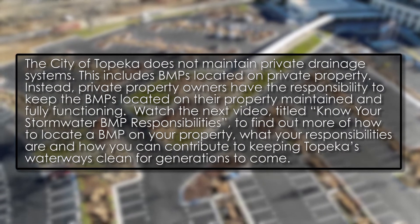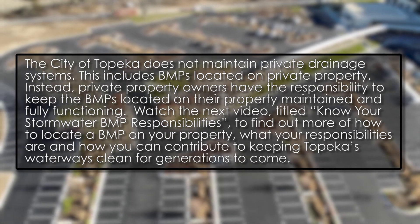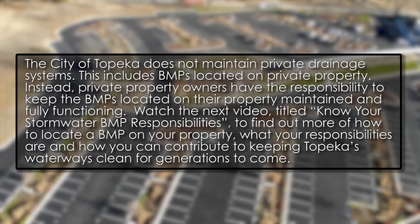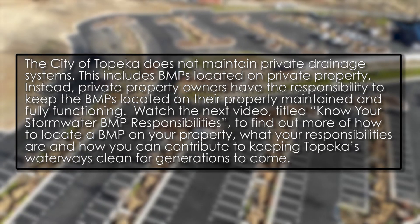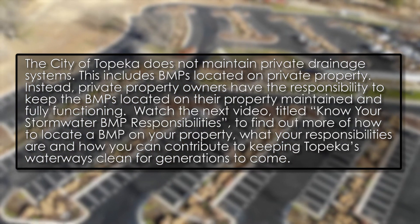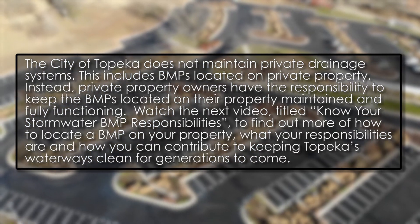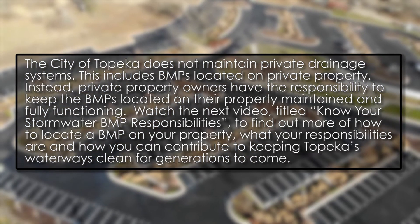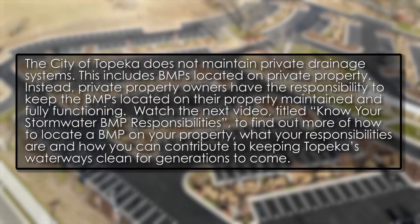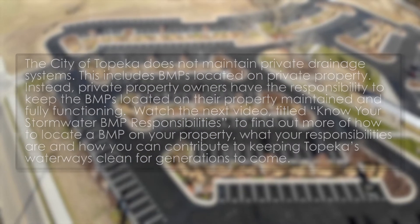The City of Topeka does not maintain private drainage systems. This includes BMPs located on private property. Instead, private property owners have the responsibility to keep the BMPs located on their property maintained and fully functioning. Watch the next video, titled 'Know Your Stormwater BMP Responsibilities,' to find out more — such as how to locate a BMP on your property, what your responsibilities are, and how you can contribute to keeping Topeka's waterways clean for generations to come.